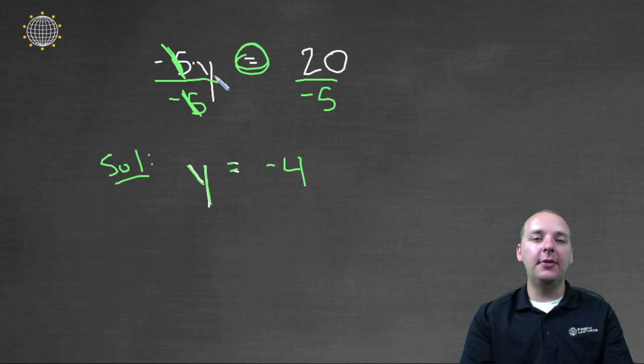Now you could even think of this, even this example, as the multiplication property. You could think of it like this.